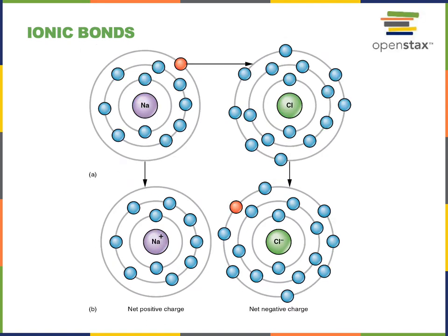Chemical bonds hold atoms together to form molecules. Chemical bonds involve electrons being either shared between two atoms in a molecule, or electrons may be lost from one atom and taken by another atom to create ions with opposite charges, and then these oppositely charged ions can be attracted to form a bond.